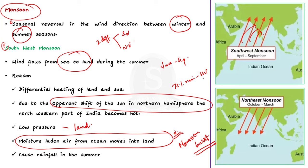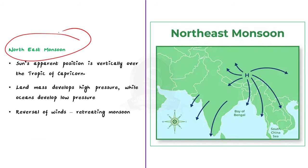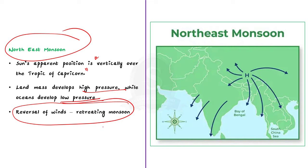For the northeast monsoon: in winter, the sun's apparent position is vertically over the Tropic of Capricorn, so the land develops high pressure while the ocean develops low pressure. So the flow of monsoon is reversed to form the northeastern monsoons, also called the retreating monsoon. This type of monsoon occurs in India from October to December.